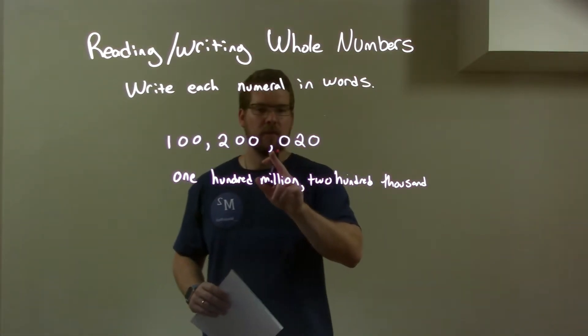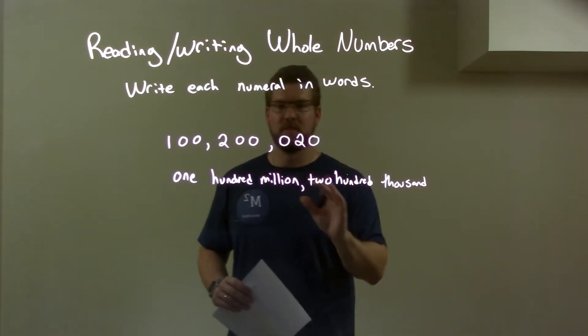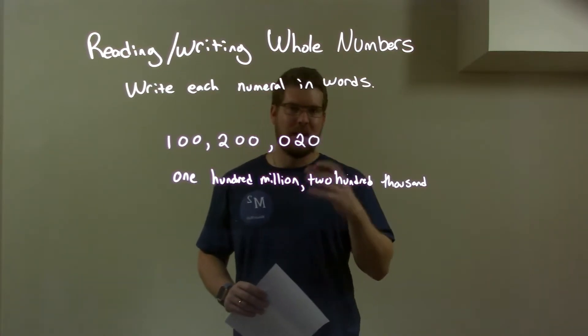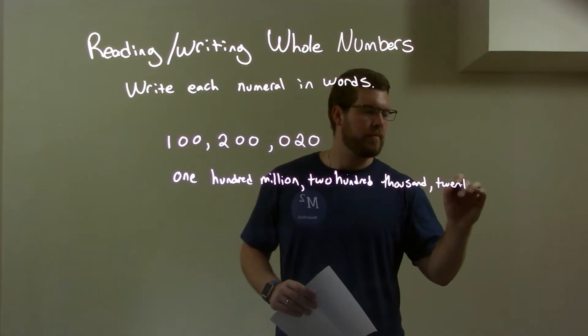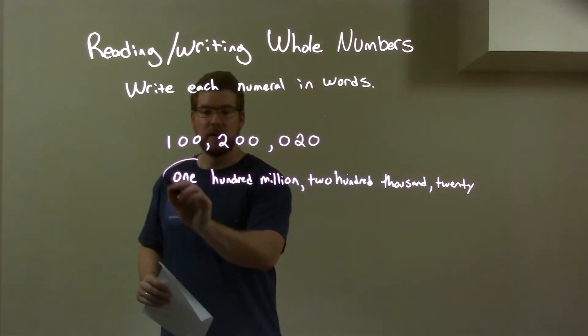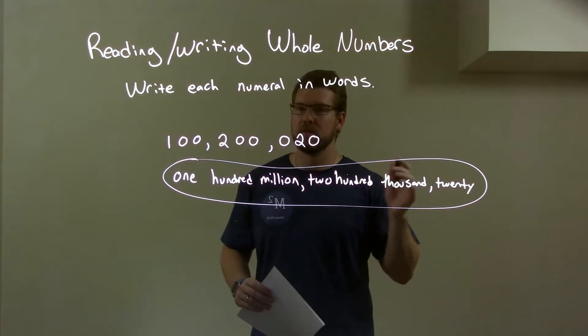And lastly, we just have, well, in this last little section, just 20. And there's nothing else. This is the last section here. It's not thousands or anything. It's just its own. So, we just have 20. And there we have our final answer. 100 million, 200 thousand, 20.